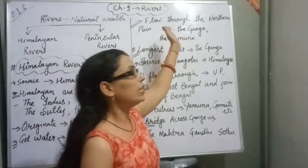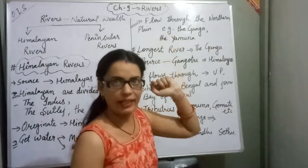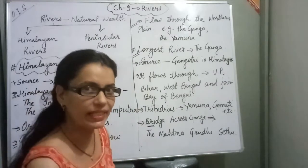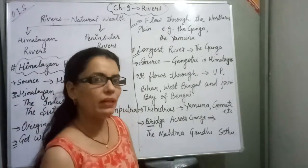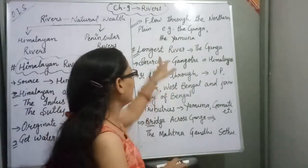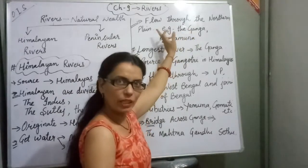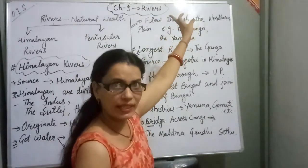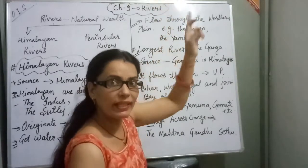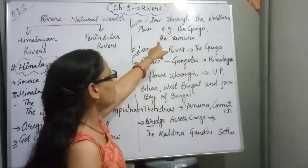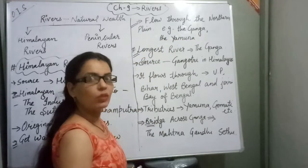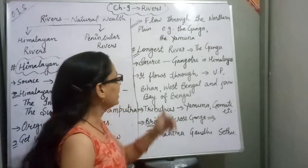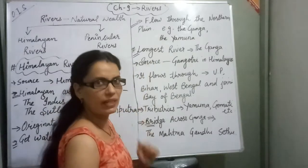The Himalayan rivers flow through the Northern Plains, which is the upper north of India. Examples of Himalayan rivers are Ganga and Yamuna.